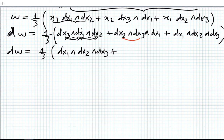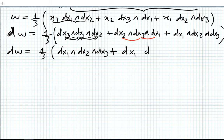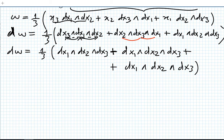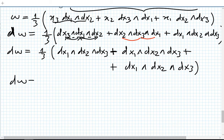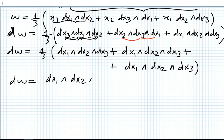For dx₂∧dx₃∧dx₁, we need to perform transpositions — after 4 sign changes we again get a plus sign, giving dx₁∧dx₂∧dx₃. The last term dx₁∧dx₂∧dx₃ is already ordered. So dω equals one-third times (1 + 1 + 1) dx₁∧dx₂∧dx₃ = dx₁∧dx₂∧dx₃.